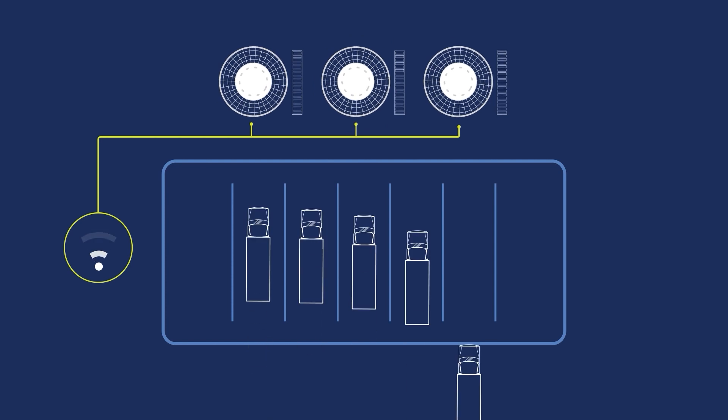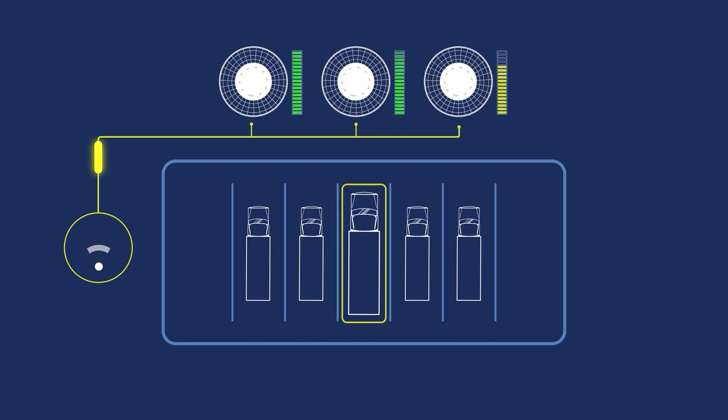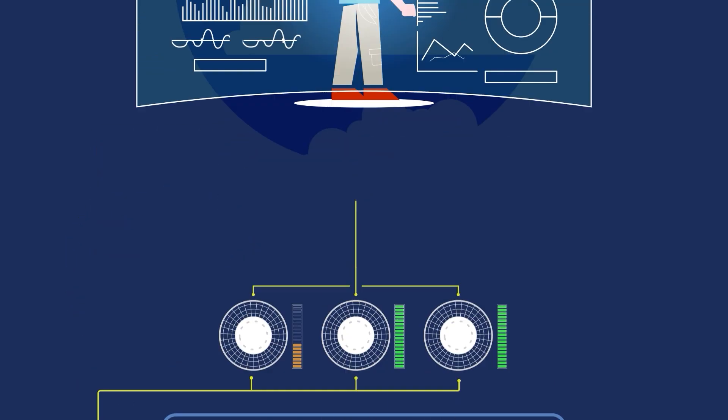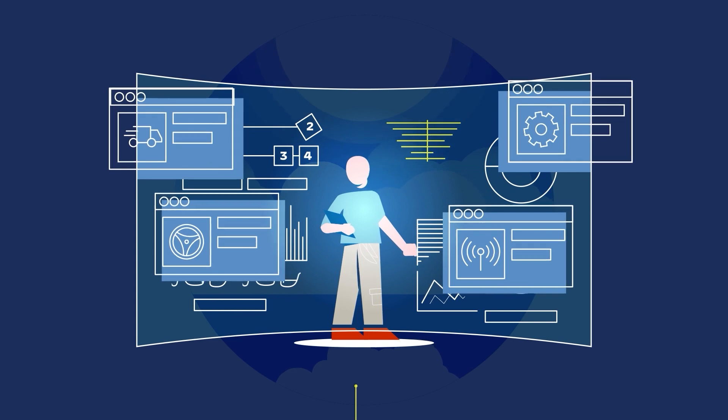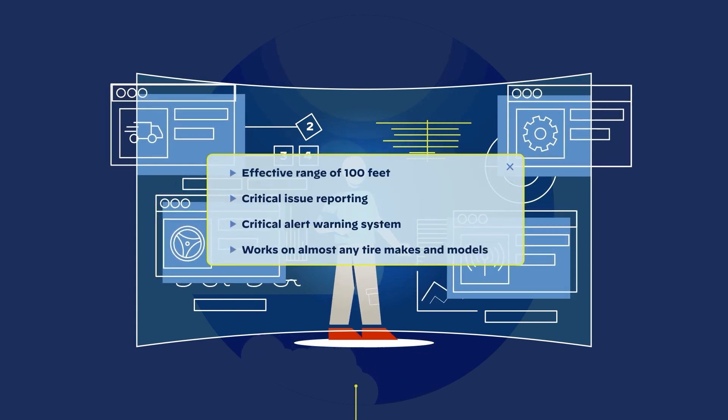While the fleet is in-yard, a router receives signals from tire sensors that are attached to each tire's valve stem. These sensors are read periodically throughout the day while within range of the router. The data is then transmitted to the cloud and into our asset management system.